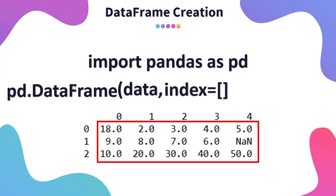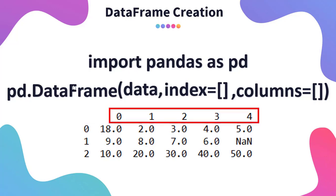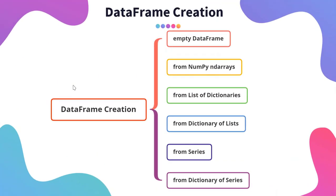We can also write 'index' and then pass the list of index. This index is optional, and by default it is an integer value starting from zero. There is also another optional parameter called 'columns'. By default, they also begin from zero and are integer values. So, let us start creating the data frames.